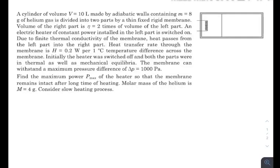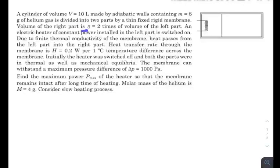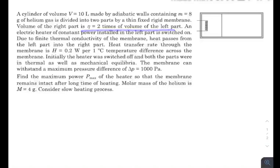There is a cylindrical volume made of adiabatic walls having helium gas of m grams divided into two parts by a thin fixed rigid membrane. This is a thin fixed rigid membrane here. Volume of the right part is eta times volume of the left part.